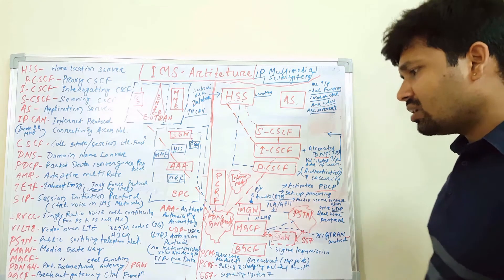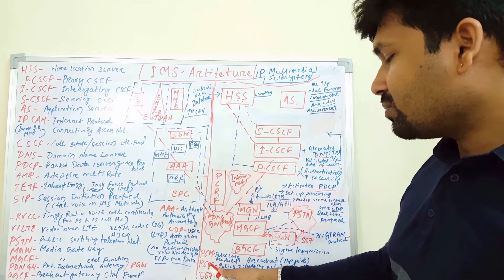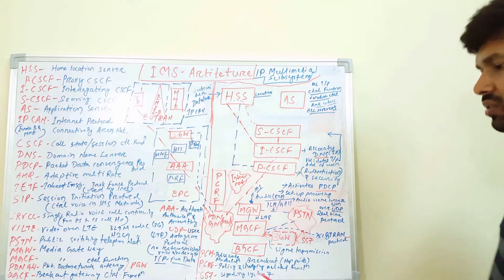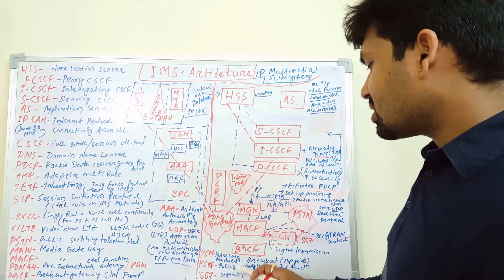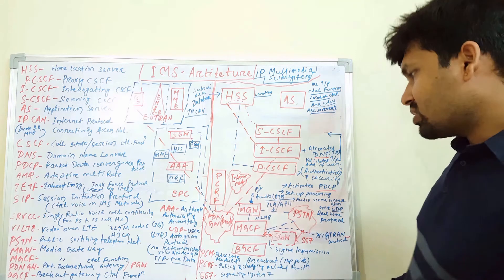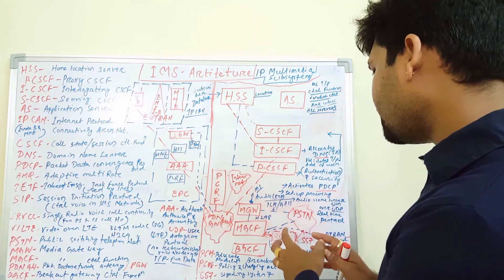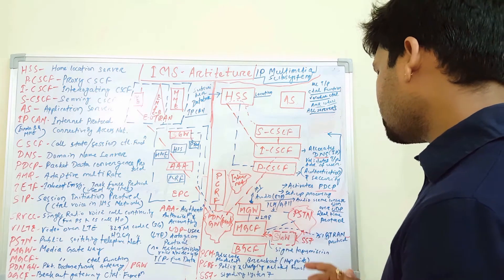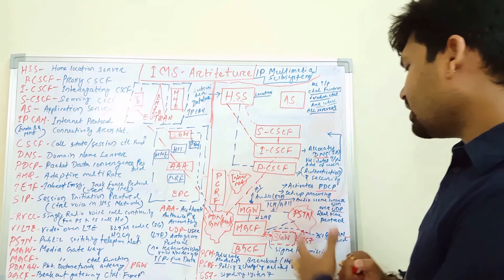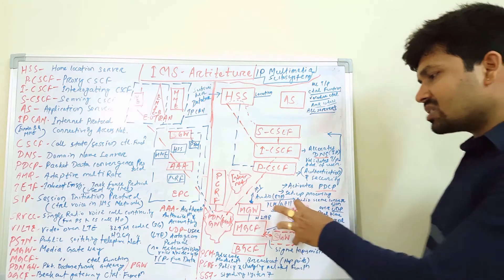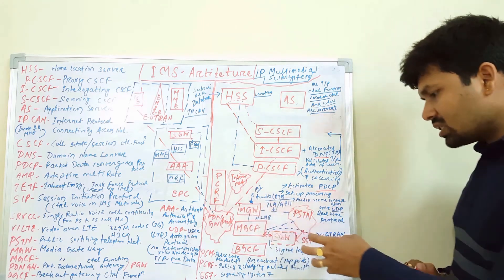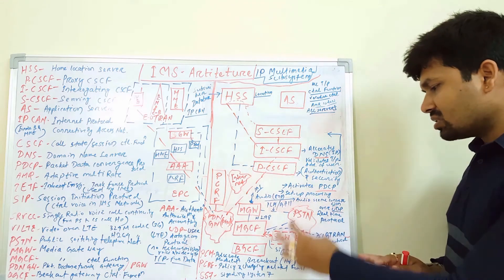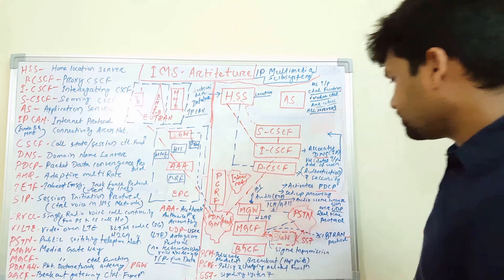PCM — pulse code modulation — is used during MGW to PSTN connectivity. PCRF is the policy and charging related function. SS7 — signaling system 7 — is used during MGW-to-PSTN and MGCF signaling transmission. Any kind of signaling transmission from PSTN is done through signaling system 7, so SS7 is used here via the MGW.